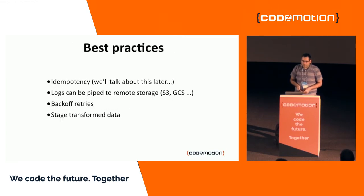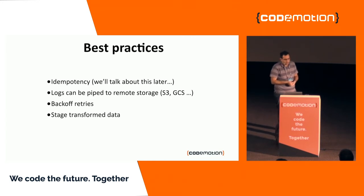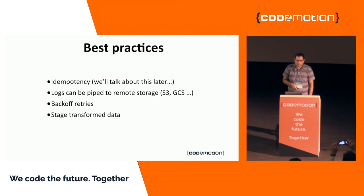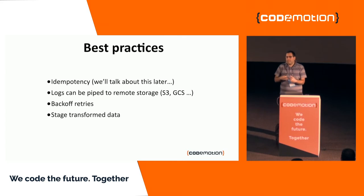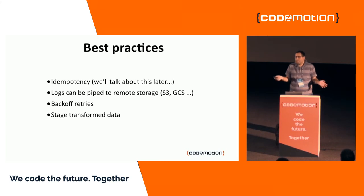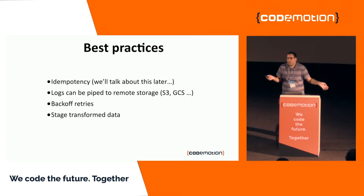Best practices: idempotency is key. Logs can be piped to remote storage like S3 or Google Cloud Storage. Use backoff retries — retry but keep adding more time between retries. A good practice is to stage transform data, so you can repeat any task safely because the necessary data is already stored in S3 and you can run it without having to rerun the whole DAG.